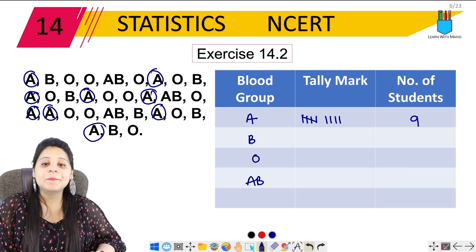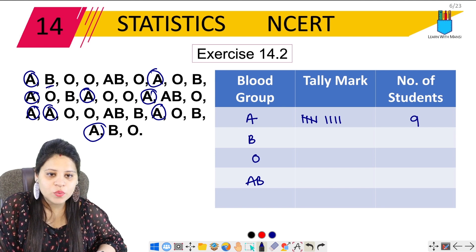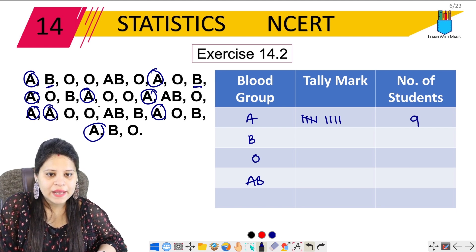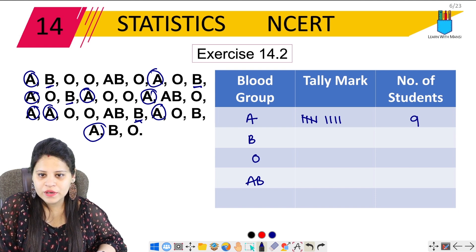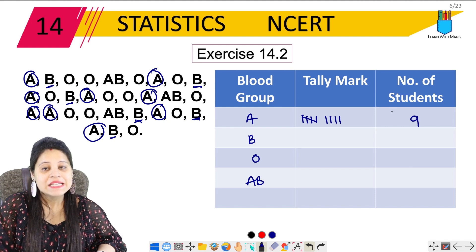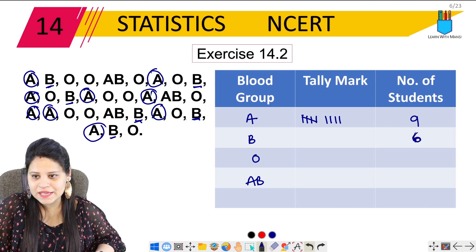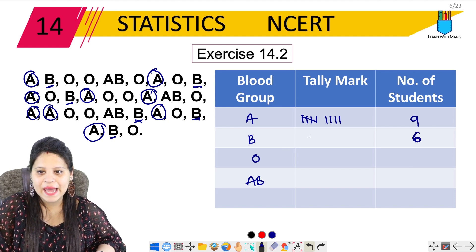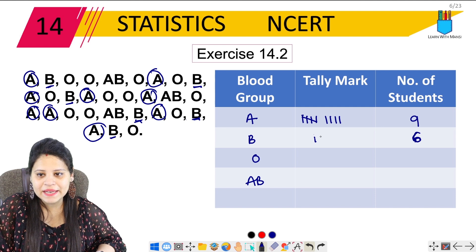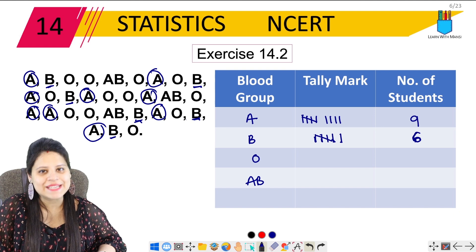Now let's see how many have blood group B. Counting: 1, 2, 3, 4, 5, 6 — there are 6 students with blood group B. We write 6 here, and for the tally marks: 1, 2, 3, 4, 5, 6.